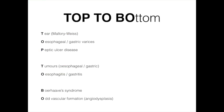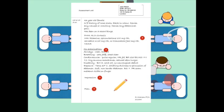Well, so there's a handy mnemonic I came up with to remember this, should you be panicking to think of a cause in an exam. And the mnemonic is top to bottom. So this stands for T for tear, so a Mallory Weiss tear. O for esophageal or gastric varices. P for peptic ulcer disease. Tumours, whether they be esophageal or gastric that have eroded into a blood vessel. Another second O for esophagitis or gastritis. B for Boerhaave syndrome, although an upper GI bleed as a result of this is uncommon. And then the final O is for odd vascular formation, in other words, angiodysplasia.